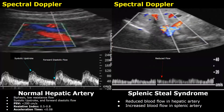In this case of splenic steal syndrome, we find an overall reduced blood flow in the hepatic artery. We cannot see a significant sharp systolic peak — a very small peak is noted, which corresponds to only 10 centimeters per second. The smallest amplitude can be considered the EDV. It is a very sluggish flow.